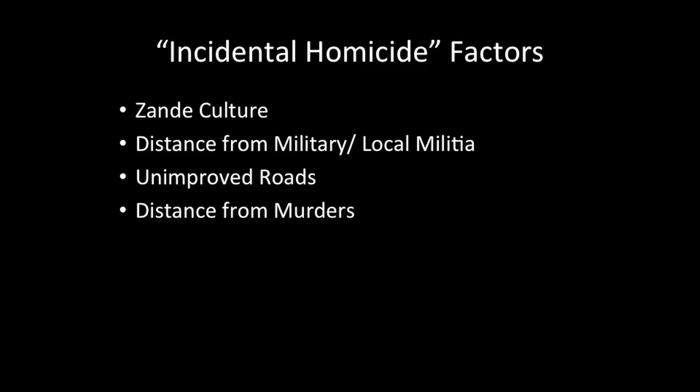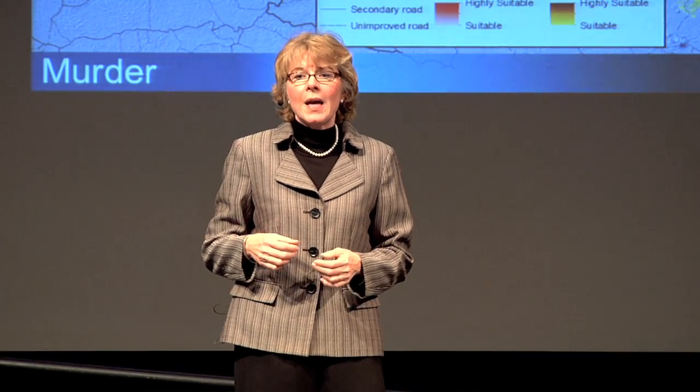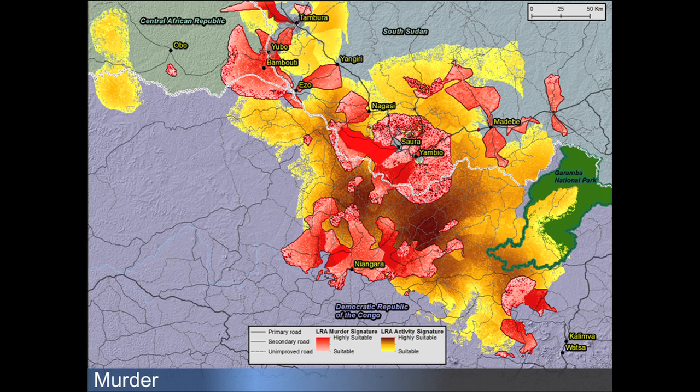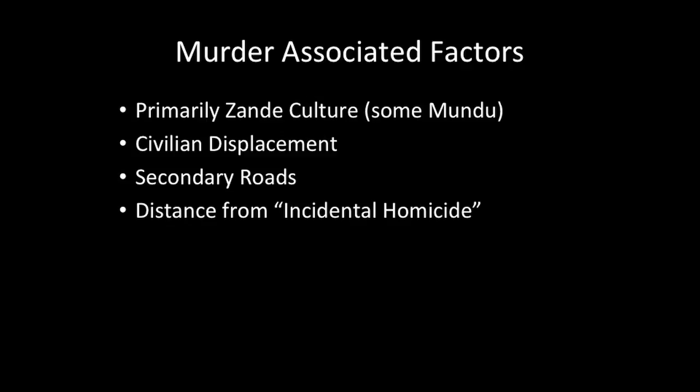As we look at the factors associated with incidental homicides, distance from murders turns out to be a very important factor, which suggests there is a meaningful, reliable difference between the murders and incidental homicides that can be modeled and refined further. Finally, we'll look at the map of murder locations. You'll see that this functions almost as a complement to the incidental homicide map, suggesting that something behaviorally is very different in those regions. When we look at the factors, it confirms that murders occur in very different areas. So we're starting to get a better understanding, and we realize it's important to further segment this space to better understand and perhaps change outcomes for people in the region.